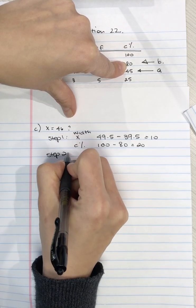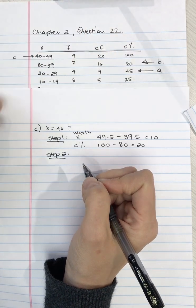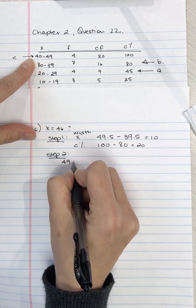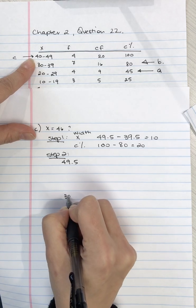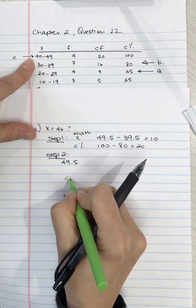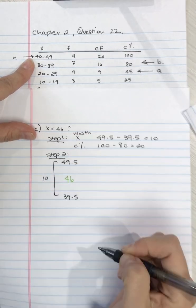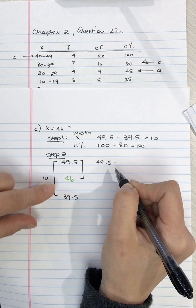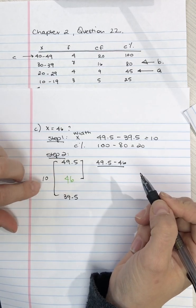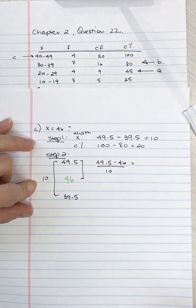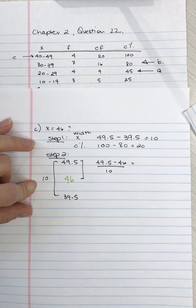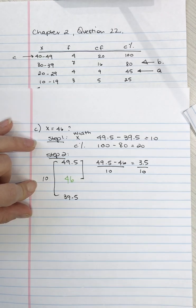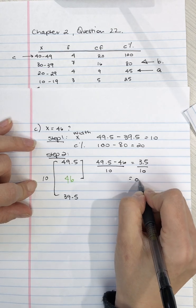Step 2 we need to find where in this interval proportionally does the score of 46 fall. So the top is 49.5 the bottom is 39.5 and our score is 46. So this whole piece is 10 units we want to find what proportion is this. So we take 49.5 subtract 46 and we divide it by the width which is 10. So we get 49.5 subtract 46 that's 3.5 divided by 10 and that gives us 0.35.